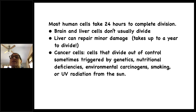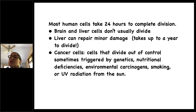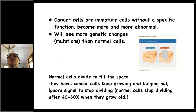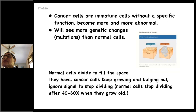You might be wondering what the difference is between normal cells and cancer cells. Cancer cells divide out of control — sometimes triggered by genetics, nutritional deficiencies, or environmental carcinogens like smoking or UV radiation from the sun. Cancer cells are immature cells without a special function; they become more and more abnormal and tend to have more genetic mutations than normal cells. Normal cells divide to fill the space they have; cancer cells just keep growing and bulging out, ignoring the signal to stop dividing. Normal cells stop dividing after 40 to 60 times when they grow old.